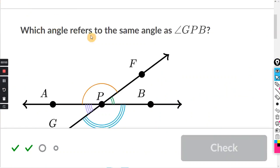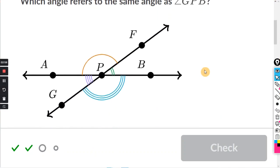Here they ask which angle refers to the same angle as G, P, B. So I'm going to trace G, P, B. I'm going to start at G, P, B. And I don't know if these will be in the answers, but G, P, B has three arcs to mark the angle. So let's take a look.